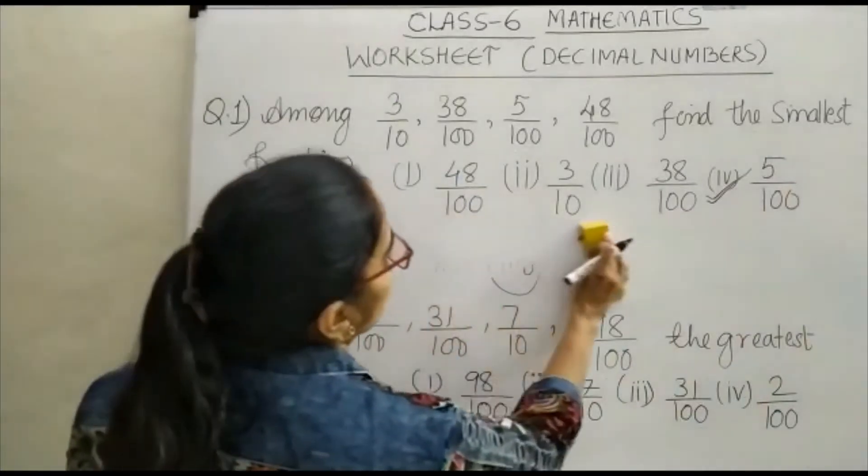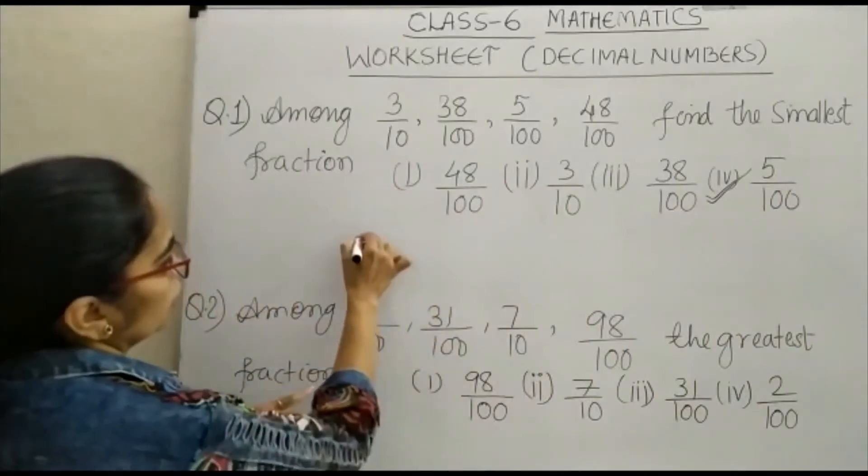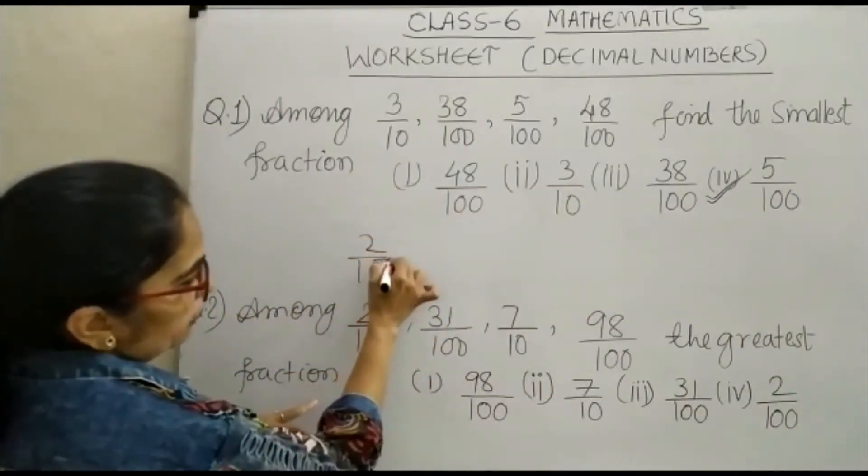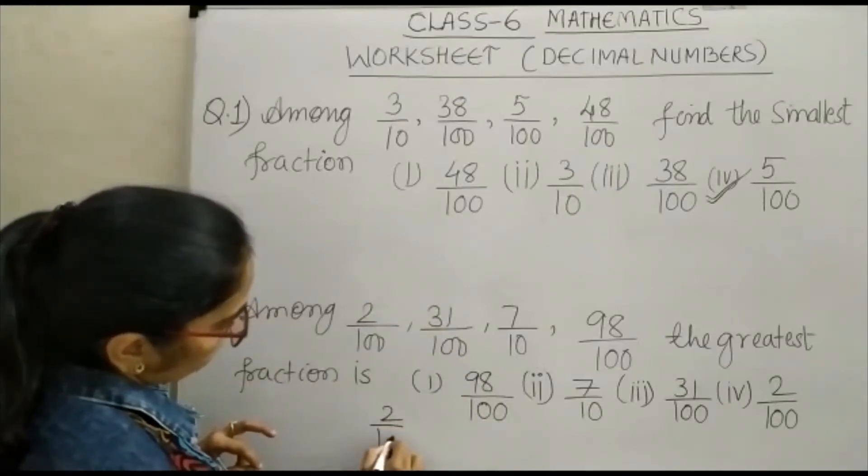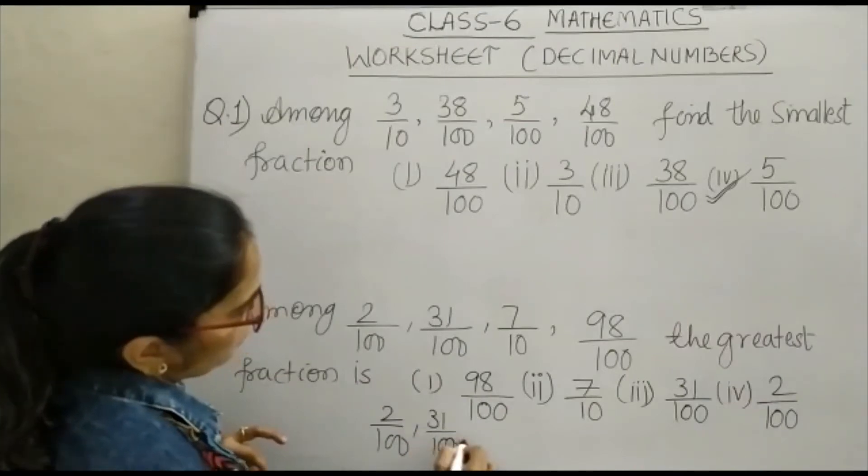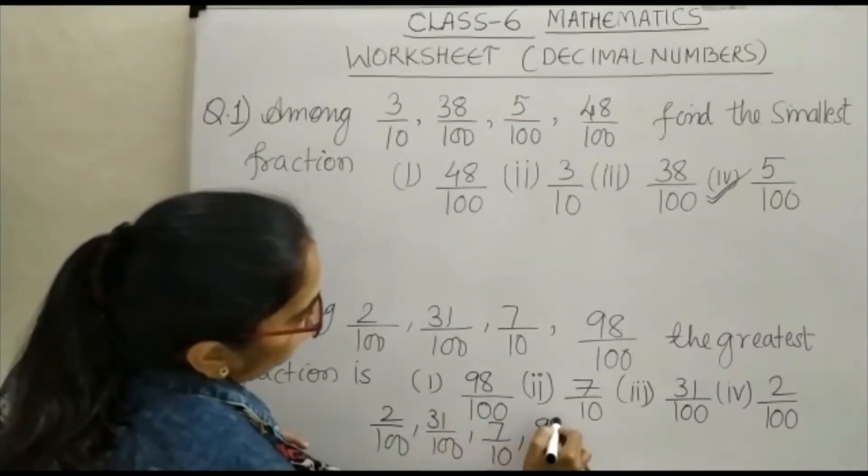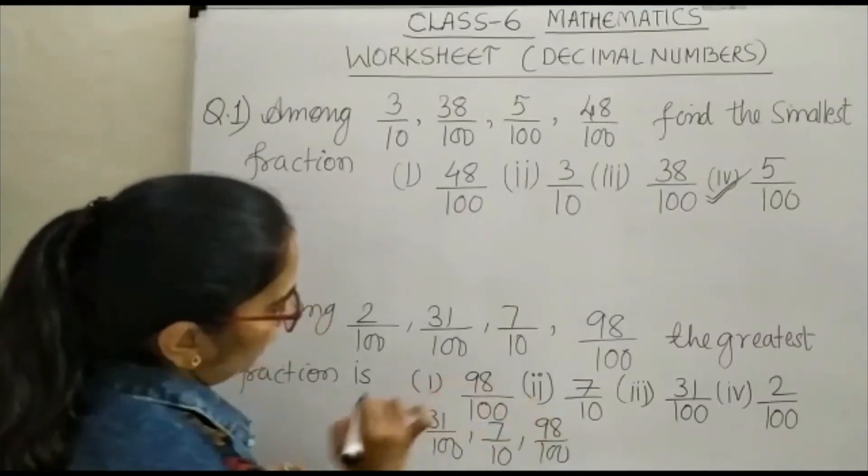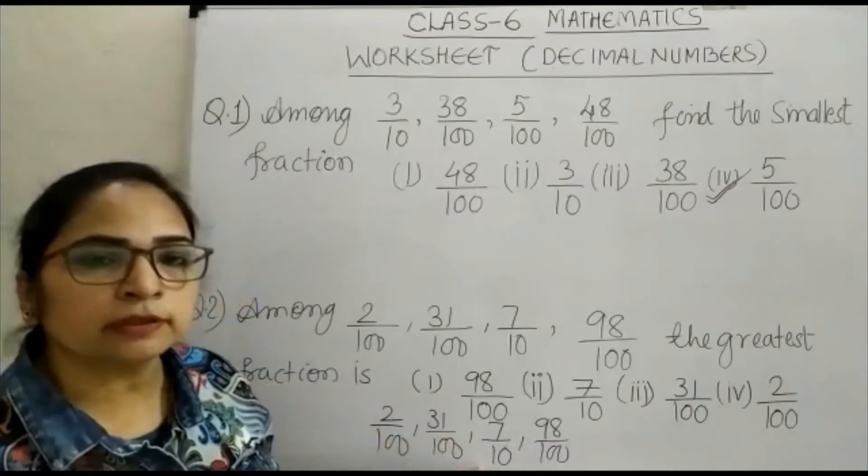Second one: 2 upon 100, and I can take it here. This is your 2 upon 100, 31 upon 100, 7 upon 10, and 98 upon 100. The same thing - you can see that all denominators are the same except the third one.